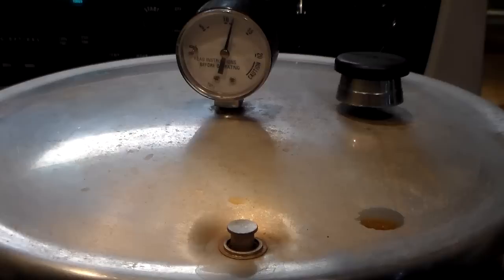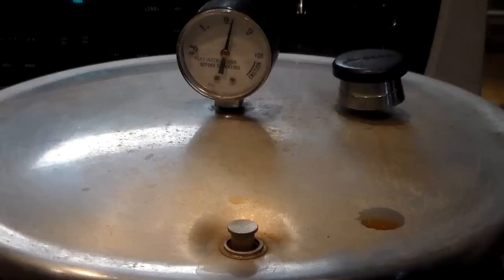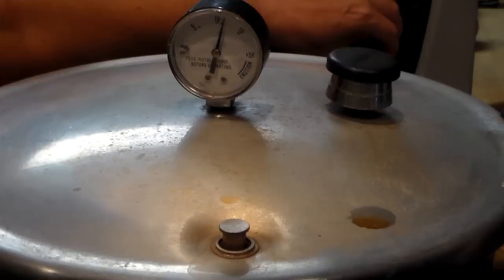Now we're going to set the timer. Pinto beans take about four to seven minutes. Since I'm planning on canning these once I'm done, I'm going to turn them off after they've been at the correct pressure for about four minutes. Okay, so it's been about four minutes.